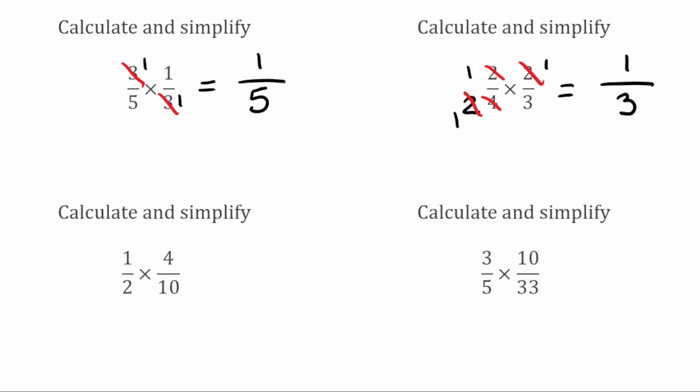For our next question, we've got a half multiplied by 4 tenths. Looking at the fractions individually — a half is in its simplest form, so we can't cancel that down. Now 4 tenths — we can actually cancel that down because 4 over 10 has a highest common factor of 2. Dividing both by 2 gives us 2 over 5. So 4 tenths is equivalent to 2 fifths.